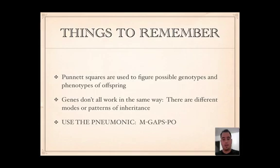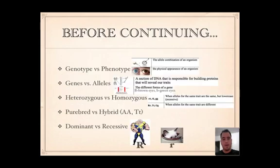Use the mnemonic MGAPS-PO. Before continuing, here are a couple of terms. Genotype versus phenotype: the genotype is the allele combination of an organism — also the letter combination. Phenotype is the physical appearance of an organism. Genes are sections of DNA that contain instructions to build a protein that will reveal our traits.